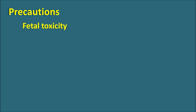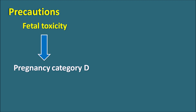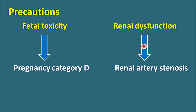The next important precaution is fetal toxicity. Lisinopril can produce fetal damage and is classified as pregnancy category D, indicating it produces fetal toxicity. That's why Lisinopril should be avoided in pregnant women as it produces fetal malformations. Another important precaution is renal dysfunction — it can further worsen renal artery stenosis where arteries are narrowed, reducing glomerular filtration and renal functionality, as well as in severe congestive heart failure, as it can increase renal dysfunction resulting in complete renal failure.